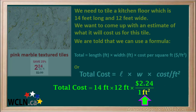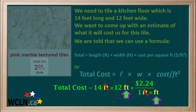The unit feet squared can be replaced by feet times feet. Dimensional analysis means we look at all the units. This foot on top and this foot on the bottom will cancel each other, and this foot on top and this foot on the bottom will also cancel each other. So now all of the feet units have been cancelled, and the only unit we have left is dollars.